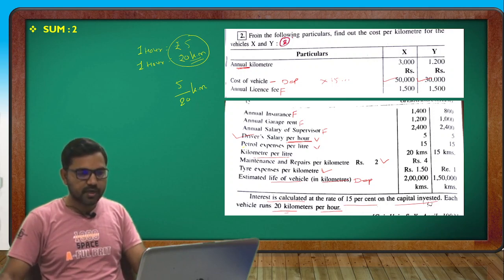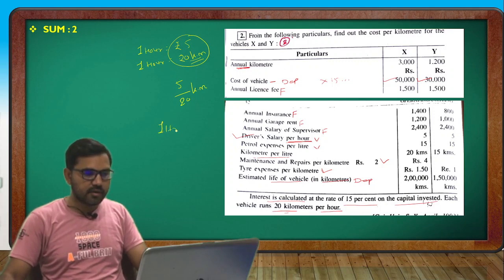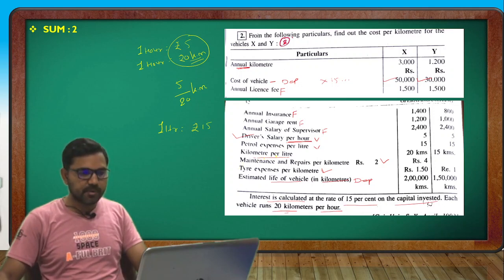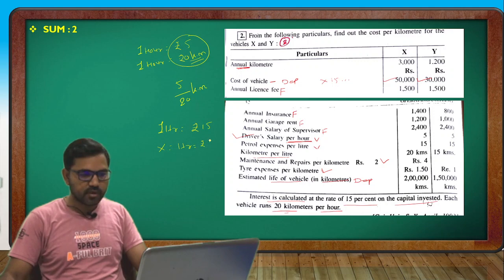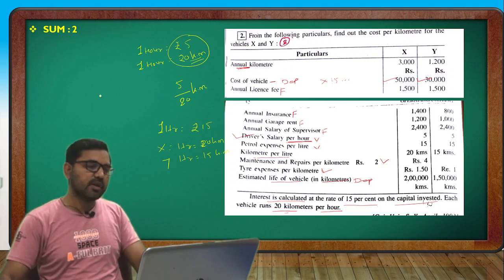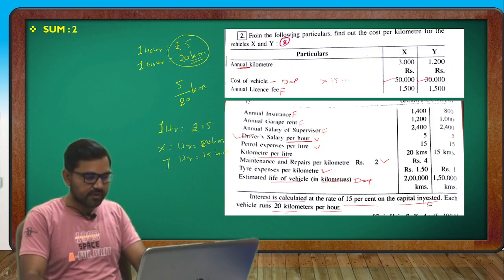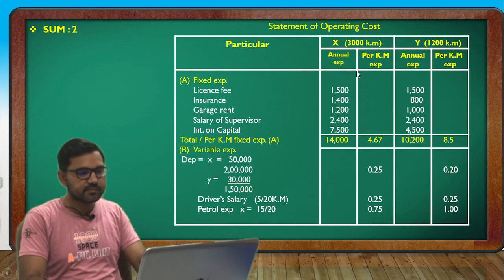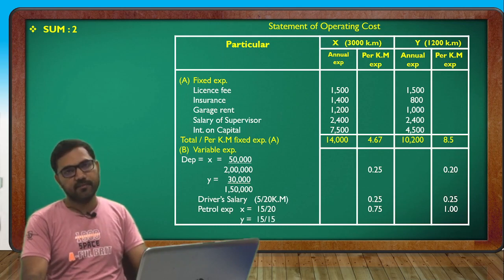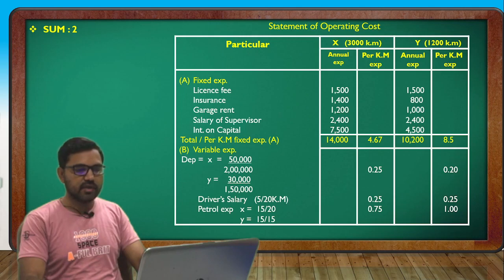Petrol: 1 litre equals 15 rupees. Vehicle X gives 20 km per litre and vehicle Y gives 15 km per litre. So petrol cost per km: X = 15 divided by 20 = 0.75 rupees per km; Y = 15 divided by 15 = 1 rupee per km.